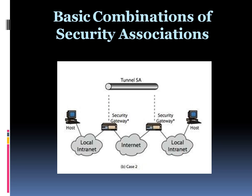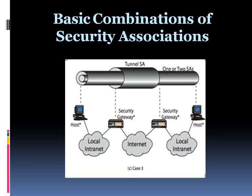In Case 2, security is provided only between the gateways — routers, firewalls, etc. — and no hosts implement IPSec. This case illustrates simple Virtual Private Network support. The security architecture document specifies that only a single tunnel SA is needed for this case. The tunnel could support AH, ESP, or ESP with the authentication option. Nested tunnels are not required because the IPSec services apply to the entire inner packet since tunnel mode is used.